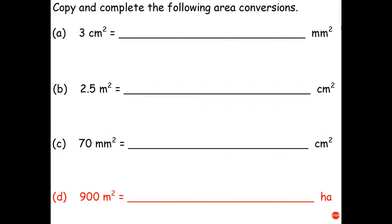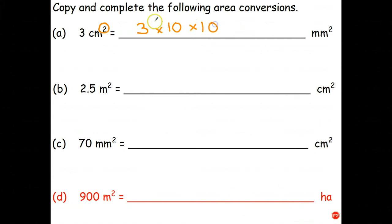I'm going to do two of these, and then I want you to try the other two. I'm converting 3 square centimeters into square millimeters. First I write down the 3. Now I'm going from big units to small units, so I need a bigger number — I have to multiply. One centimeter is 10 millimeters, so I multiply by 10. But because it's an area, I have to do it twice. Three times 10 is 30, times 10 is 300. So multiply by 10, then multiply by 10 again.